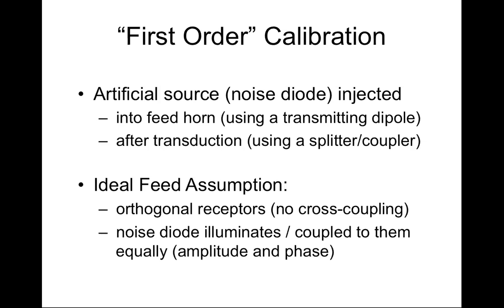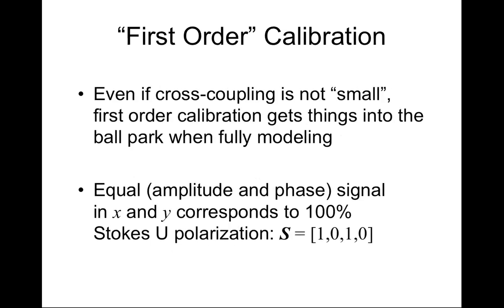The ideal feed assumption states that our receptors are orthogonal — there's no cross coupling — and our noise diode illuminates or is coupled to each of them equally in both amplitude and phase. Even if the cross coupling isn't small or negligible, this first-order calibration can often get you into the ballpark of the actual solution when doing a full modeling process. So it's still very useful even if you intend to do full calibration of the cross coupling.